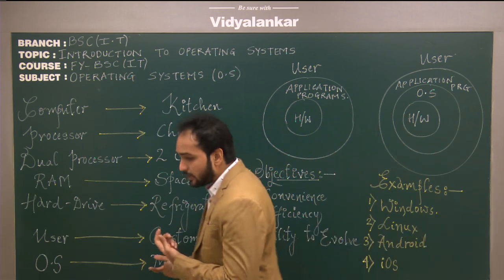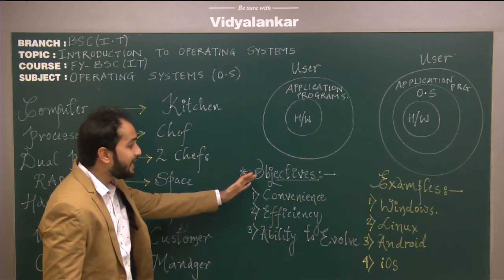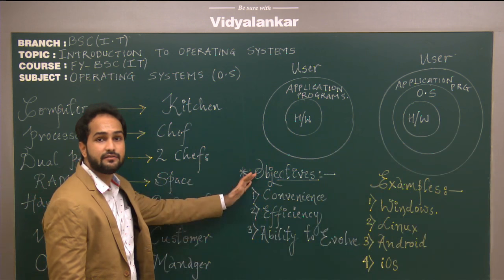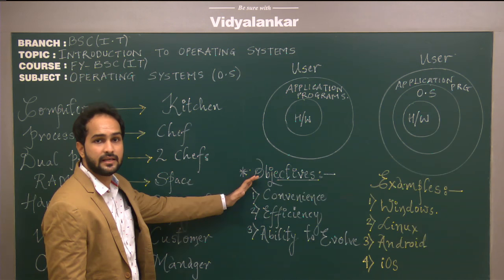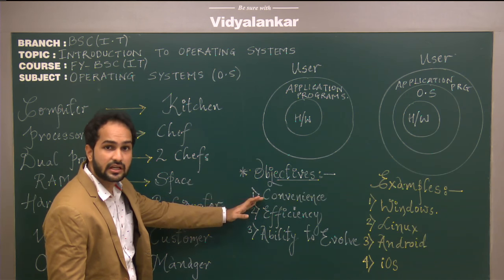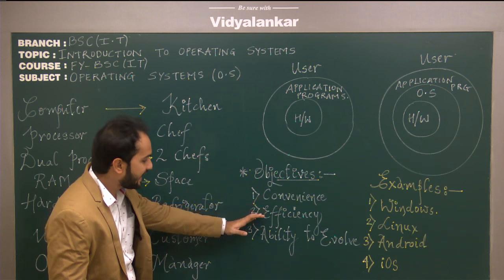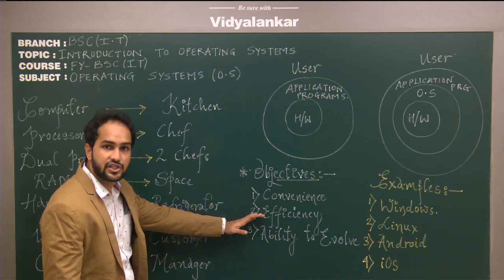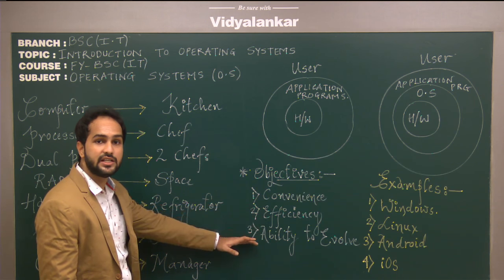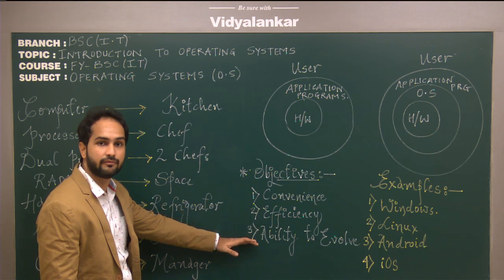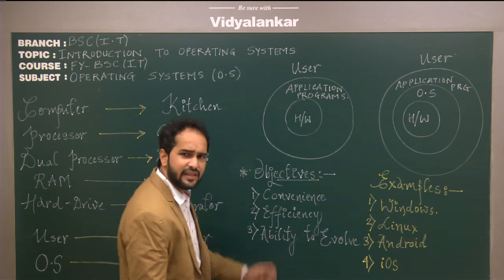Apart from this, there are three major objectives of an operating system. They are: first, convenience; second, efficiency; and third, ability to evolve.